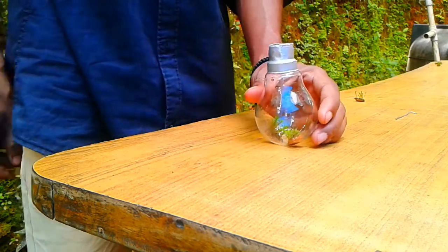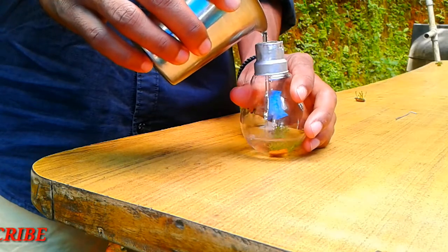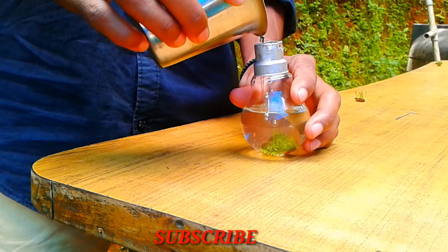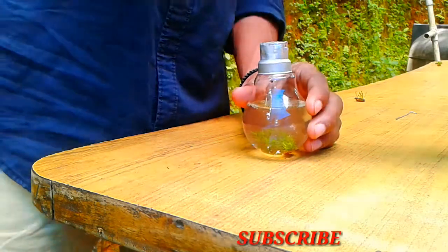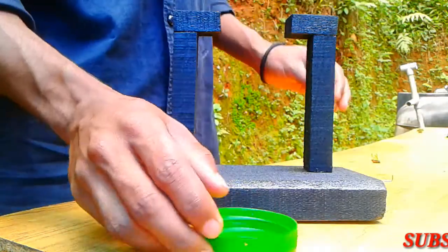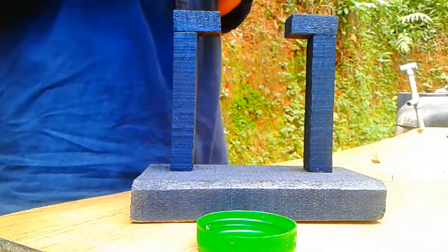Now let's position the plant at the top of the bulb and arrange the other elements inside.